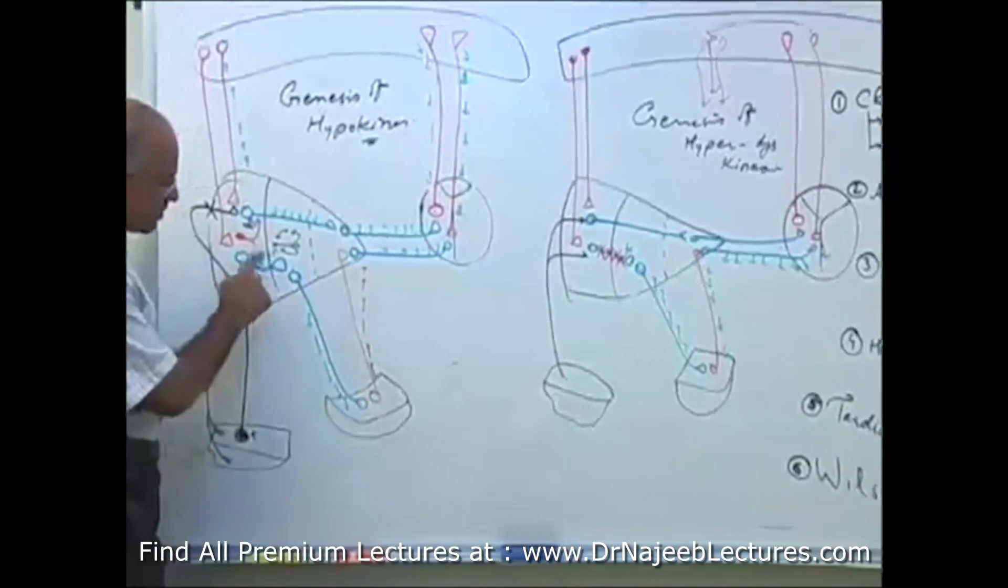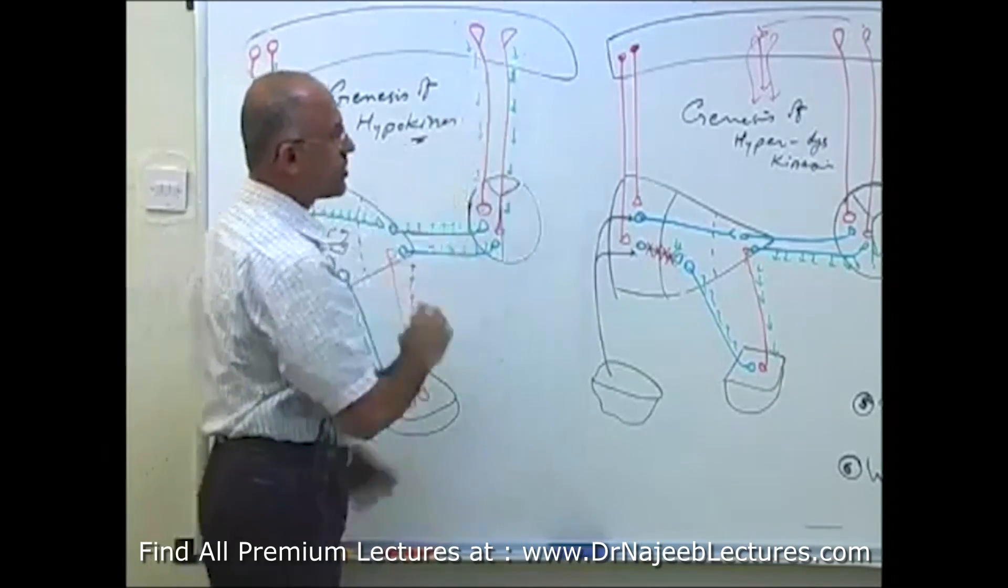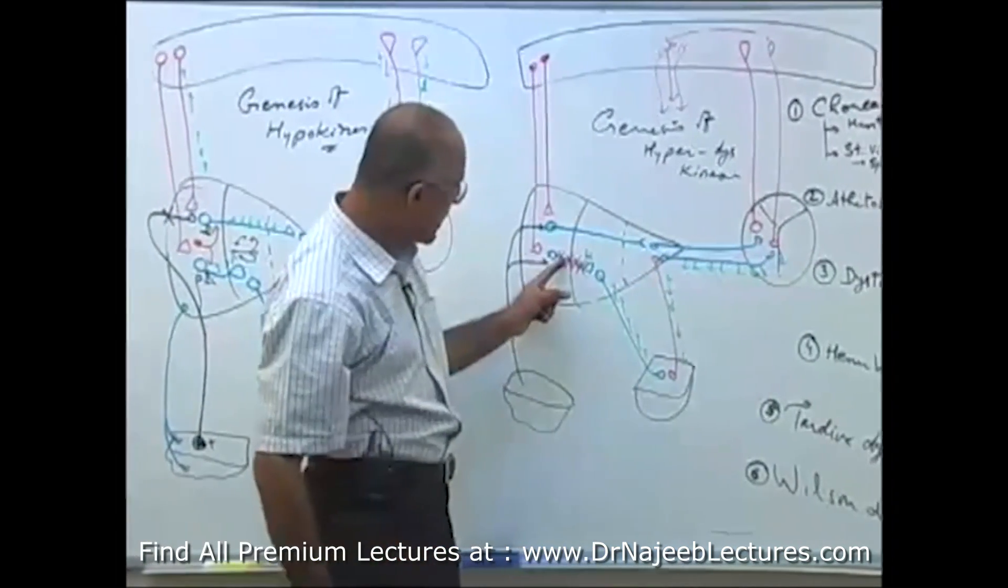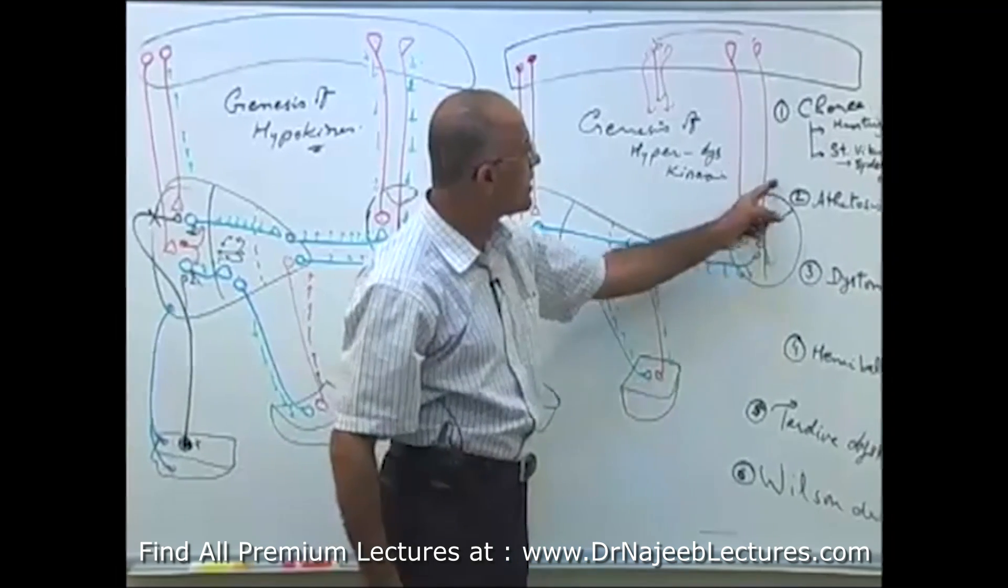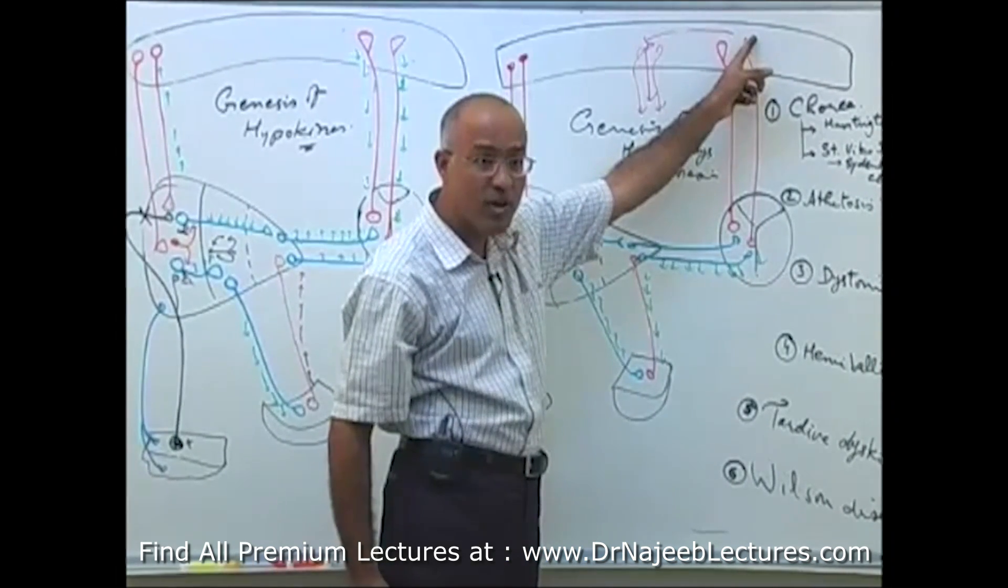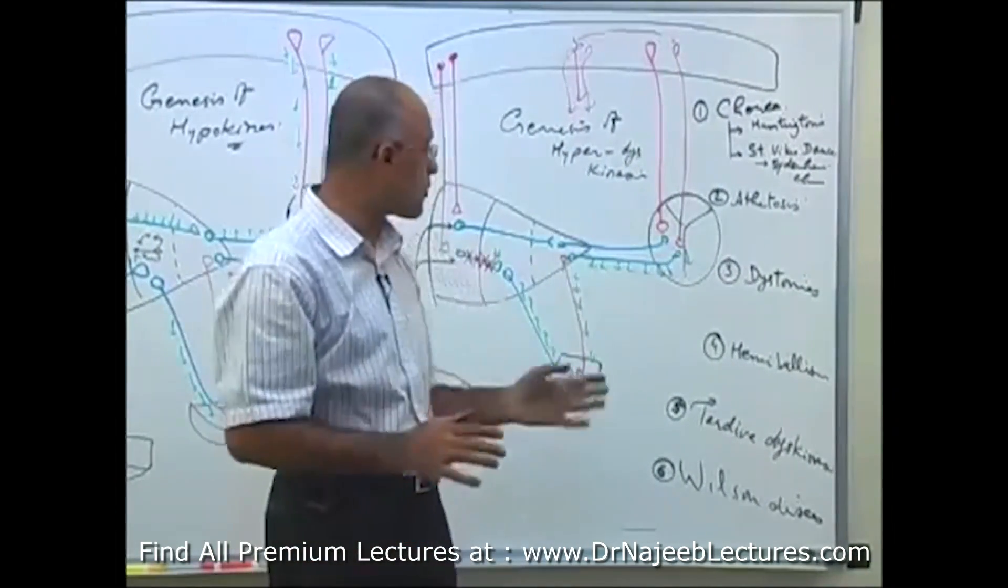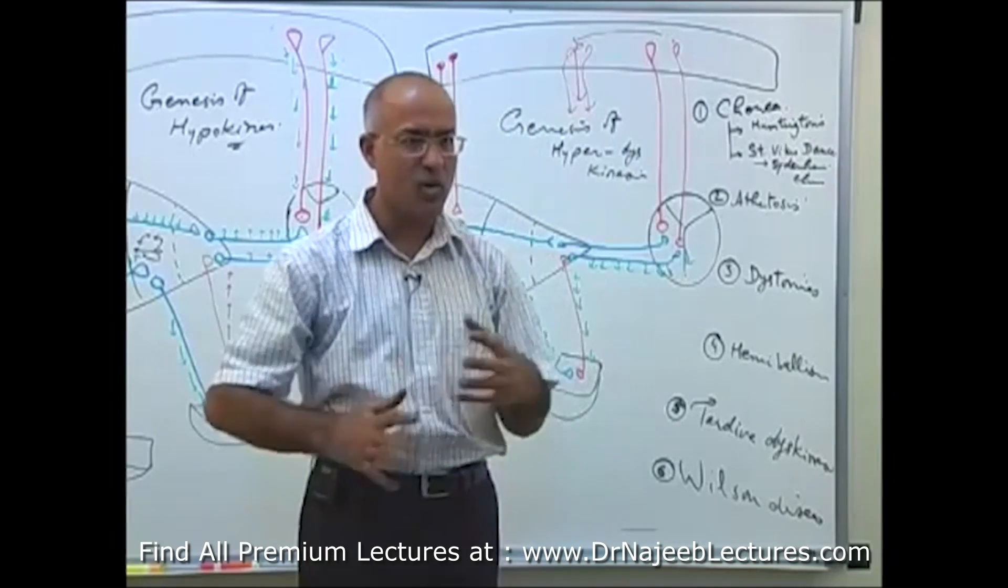I will tell you exactly how the chorea is produced. Many motor programs are abnormally released. What I told you, that when this pathway is inhibited, when this pathway is not working, eventually, what will happen? Motor cortex will be overstimulated. Now, if motor cortex is overstimulated, overstimulated signals are going.